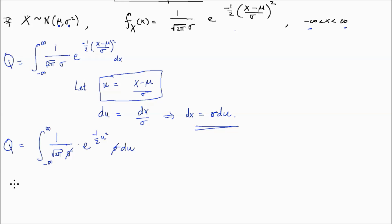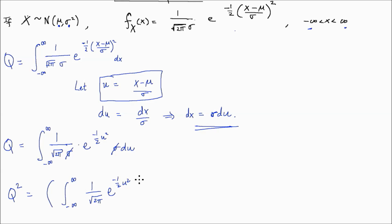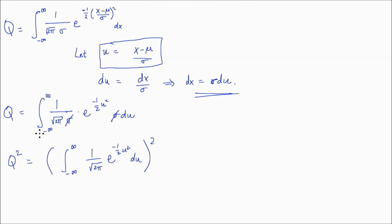It turns out it's easier to calculate the square of the quantity Q rather than just the integral Q directly. So Q squared equals the square of the integral from negative infinity to positive infinity of 1 over root 2 pi times e to the negative one-half u squared du. Squaring a quantity is the same as multiplying it by itself, so we write this expression multiplied by itself: the integral from negative infinity to infinity of 1 over root 2 pi times e to the negative one-half u squared du.